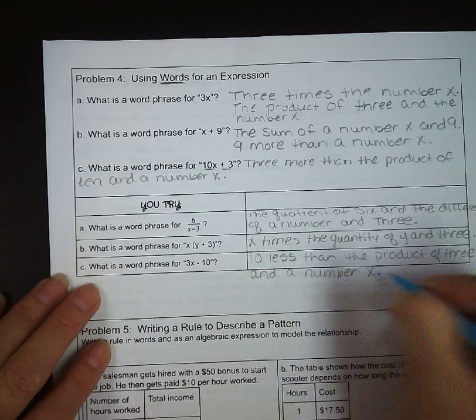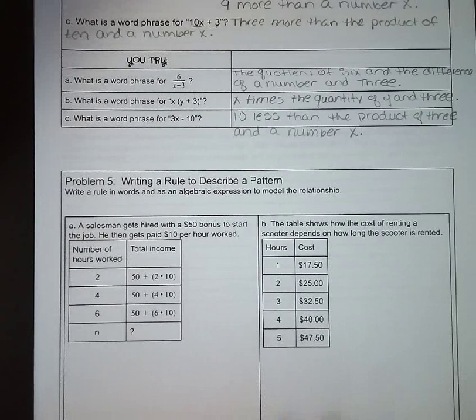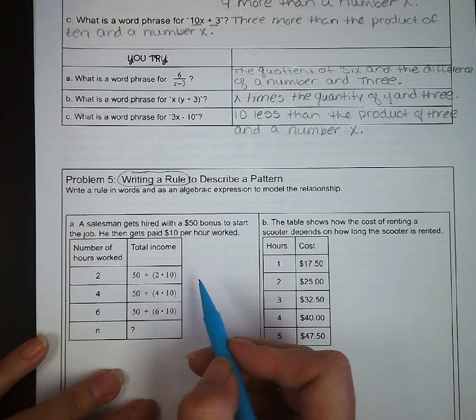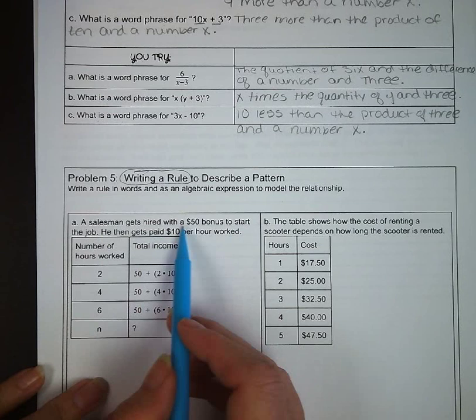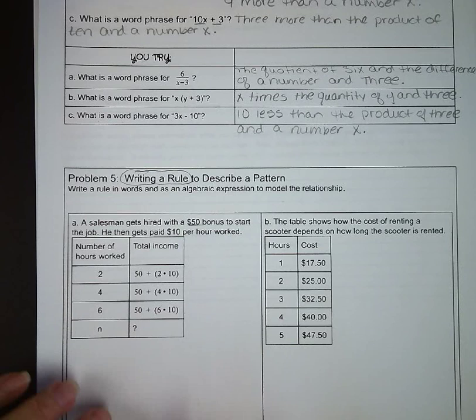Our last problem here, we've got problem number five, writing a rule to describe a pattern. We want to write the rule in words and as an algebraic expression that's going to model this relationship. So in letter A, a salesman gets hired with a $50 bonus to start the job, and he gets paid $10 per hour worked. And so we have a chart here where we have an example, two hours, and it gives us an example equation, four, six hours, and it gives us an example. So we want to figure out what is the expression for n number of hours, any number. That's our variable.